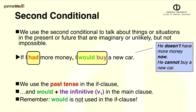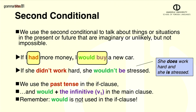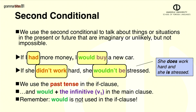Here's another example. If she didn't work so hard, she wouldn't be stressed. She does work hard and she is stressed. Here again, we have past tense in the if clause and would and the infinitive in the main clause.